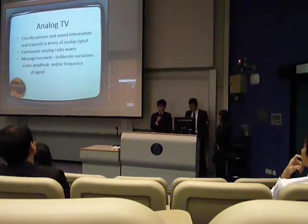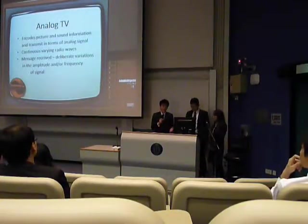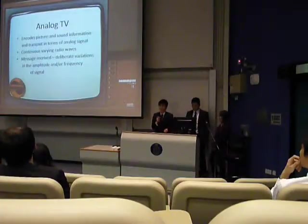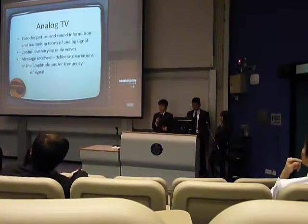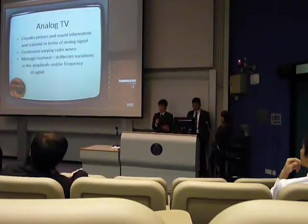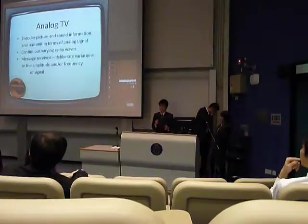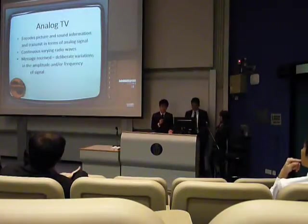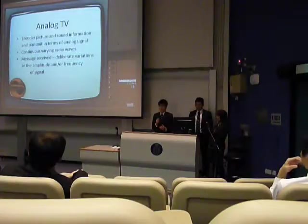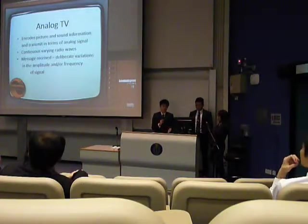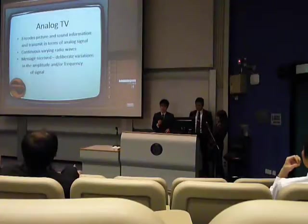For analog TV, it actually encodes picture and sound information and transmits in terms of analog signal. As we learned from lecture, analog signal is continuous and very difficult to store, and it is also a larger data to be transmitted. For the message received, it is actually a deliberate variation in the amplitude and/or frequency of the signal.